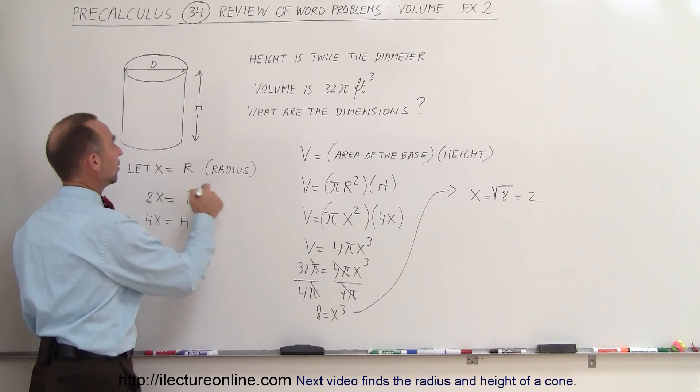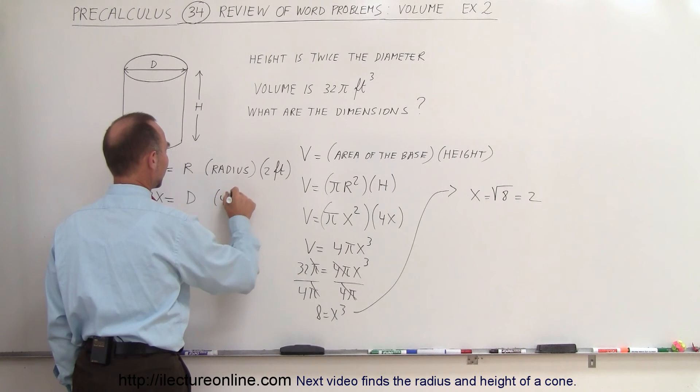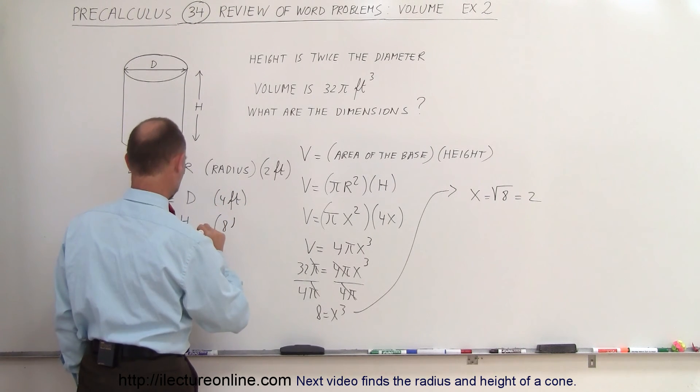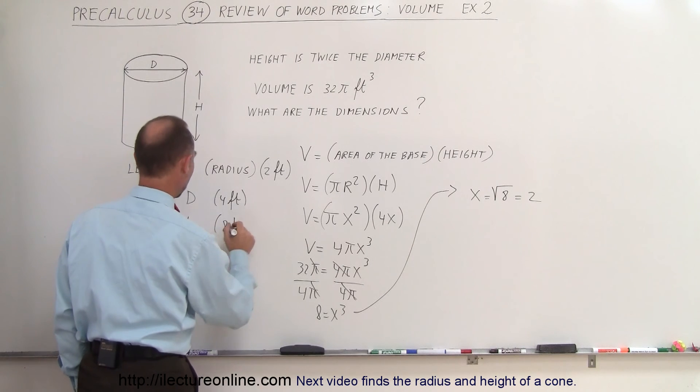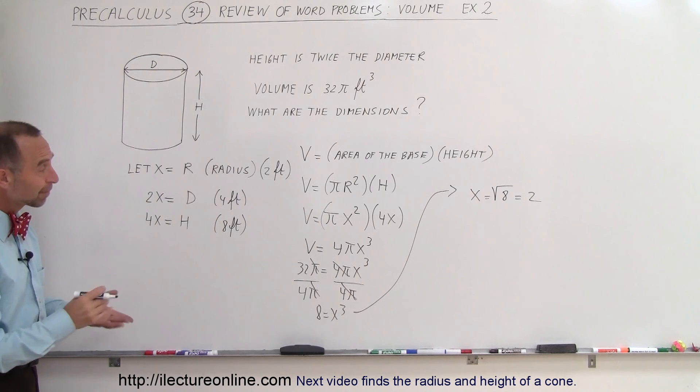That means that the radius is equal to 2 feet, the diameter is equal to 4 feet, and the height is equal to 4 times 2, 8 feet—that's right, 8 feet. And those are the dimensions of our cylinder.